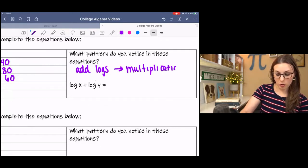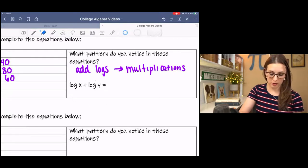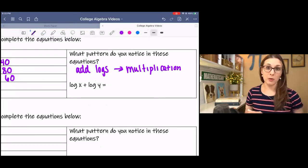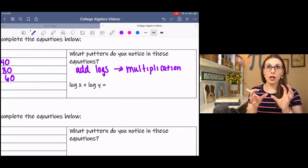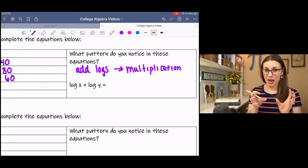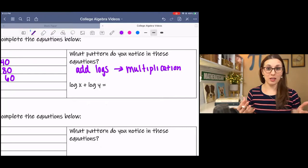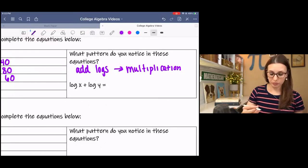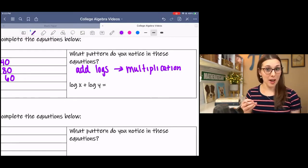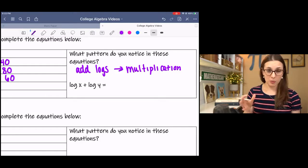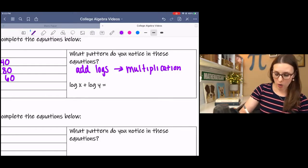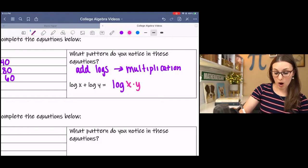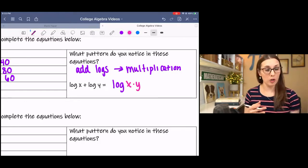If you remember back to our properties of exponents, when we had two exponential components being multiplied of the same base, we added the exponents. So this is the same property. We've got addition, and it translates into multiplication. So if we have two logs with the same base, that's important—when it doesn't have a base, it's base 10. Log x plus log y, we can consolidate that to log x times y. This is going to help us when we get into solving equations.